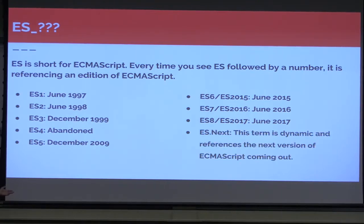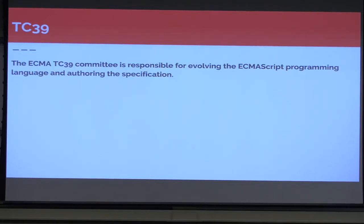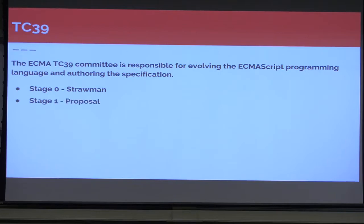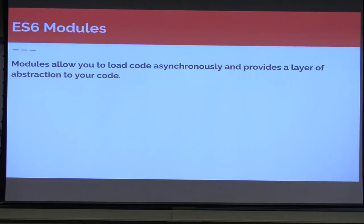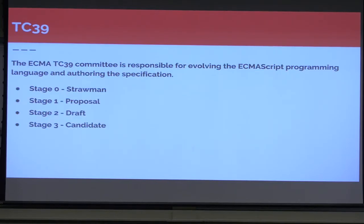ESNext is a term for dynamic references to the next version of ECMAScript coming out. The TC39 committee is responsible for evolving ECMAScript programming. They go through stages for every single feature they want to implement into JavaScript — starting with stage zero: straw man, then the proposal, then the draft, and then the candidate. Without the TC39, we wouldn't be here today. They've really pioneered JavaScript to bring it to where it is, as modern and as big as it is.